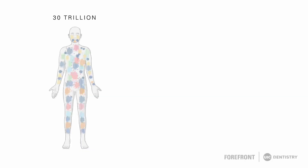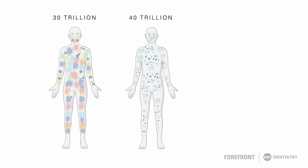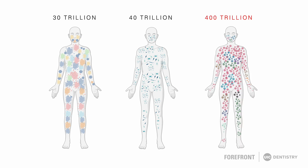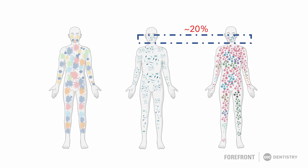Before going into gum disease, I would like to tell you about what we have in our body — who we are. As humans, we are 30 trillion cells, 40 trillion bacteria, and a whopping 400 trillion viruses. Of all the microbes we contain in our body, about 20 percent of them call the mouth their home. We live in harmony with these microbes. However, poor oral hygiene, environmental factors, and genetic susceptibility can cause gum inflammation.